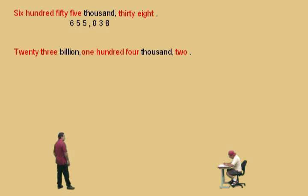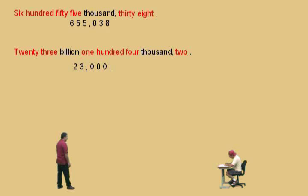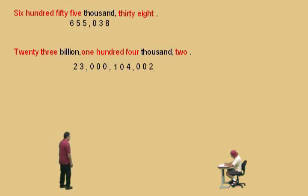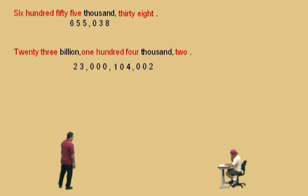How about this one, Charlie? Twenty-three — then comma. We put zeros here because there are no millions, but we've got to have those placeholders — so 000. What comes next? One, zero, four, comma — representing 104,000. And at the end? Zero, zero, two — just a two. There were no hundreds and no tens, it was just a two. There we go.